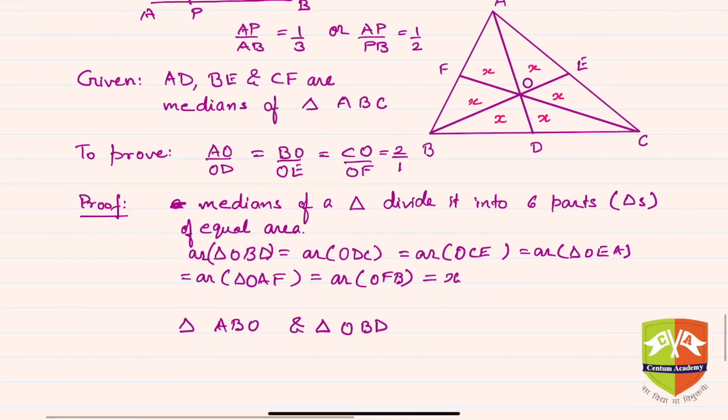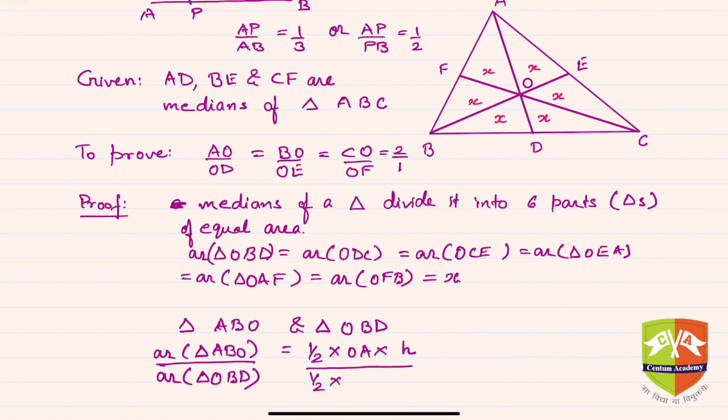So I can write area of triangle OBD is nothing but half into base, for the first case is OA into let's say h the height, and similarly half into OD into h, h being the perpendicular length.